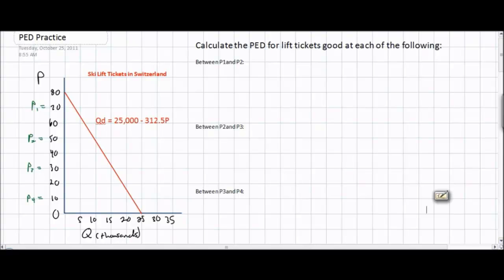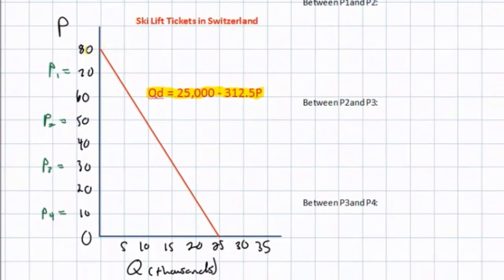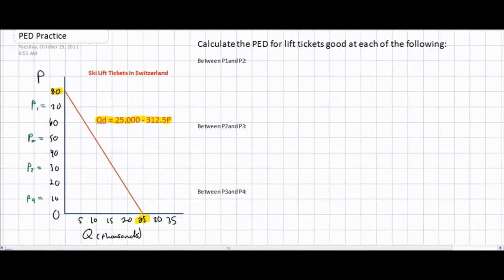In this market, the demand for ski lift tickets can be expressed using the equation Qd equals 25,000 minus 312.5P. We can determine a few things from this equation. We know that at a price of 80 francs the quantity demanded will be equal to zero ski lift tickets. However, if the price of ski lift tickets were zero — in other words, free — only 25,000 ski lift tickets would be demanded.